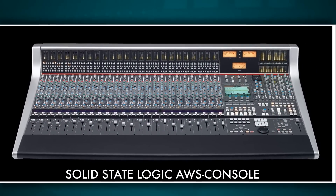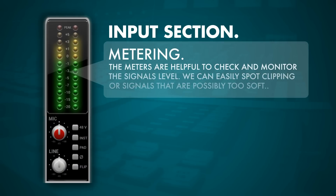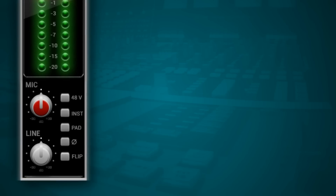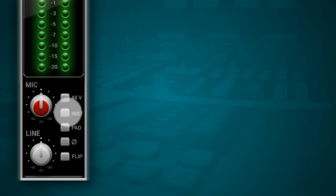Let's move to the top of our console — I'm first going to show you this Solid State Logic AWS console. Going to the top of the first channel strip, we find the input section where the signal actually enters the console. On this particular console we find a separate gain control for the microphone and for the line input level. Then there's a range of switches: the +48V switch is the so-called phantom power, which enables condenser-type microphones.